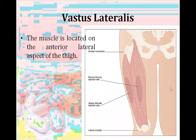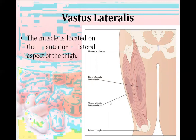The next site is vastus lateralis, located in the thigh on the anterior lateral aspect. This site is mainly used in children. The greater trochanter and rectus femoris are landmarks. There are two muscles here — vastus lateralis and rectus femoris — and we can inject medication into either of these muscles.